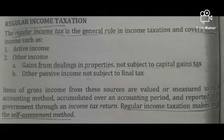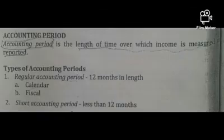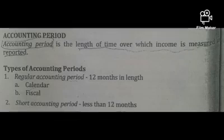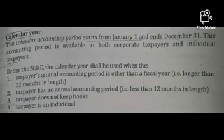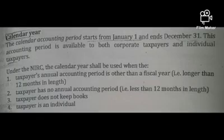In regular income taxation, items of gross income are measured using an accounting method, accumulated over an accounting period, and reported to the government through an income tax return. The regular income taxation makes use of the self-assessment method. The accounting period is the length of time over which income is measured and reported. There are two types: the regular accounting period, which consists of 12 months — either a calendar year or a fiscal year — and this is available to both corporate and individual taxpayers.